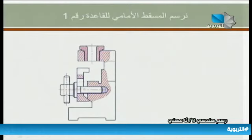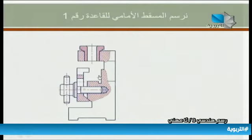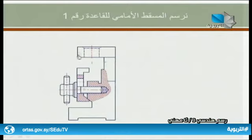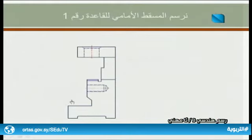نقوم برسم المسقط الأمامي للقاعدة رقم واحد. على الشاشة يظهر المسقط الأمامي لجميع القطع المكونة لدليل التثقيب، والمطلوب فقط رسم المسقط الأمامي للقاعدة رقم واحد. يجب حذف الأجزاء الأخرى: الجلبة في الأعلى، وذراع التدوير، والمحور، وجميع القطع المجاورة للقطعة رقم واحد.